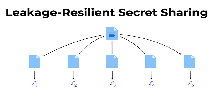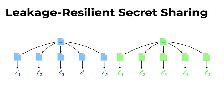The security requirement for such leakage resilient secret sharing schemes is that if we have a blue secret and a different green secret, and we independently secret share both, then the distribution of the blue leakage vectors and the distribution of the green leakage vectors should be indistinguishable to an adversary.